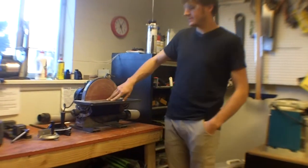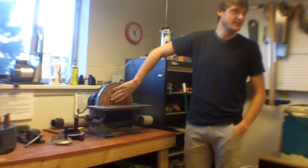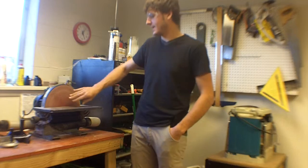Disc sander. It's pretty simple, a very simple tool. It's a big motor connected to a big steel disc with a sanding thing stuck on it, and it spins.